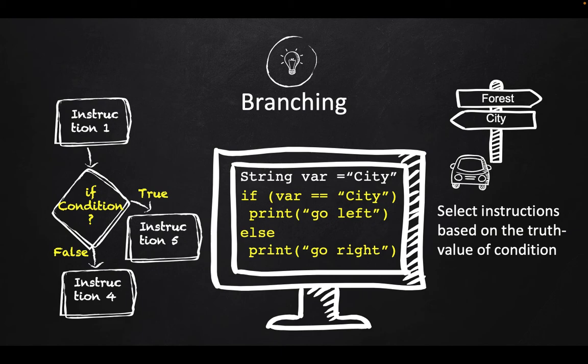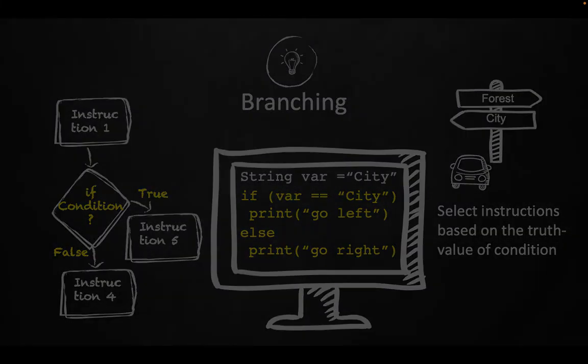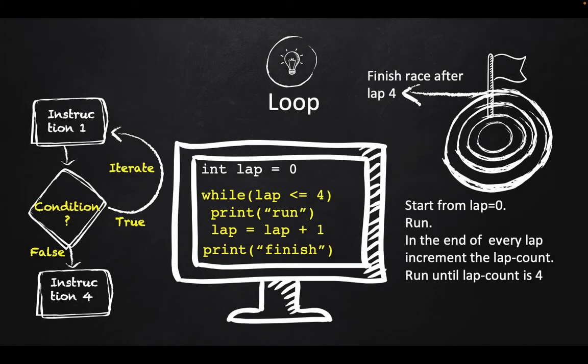The next control structure is looping, which tells you how to execute some specific set of instructions repetitively. Here also there is a condition. If the condition is true, then some specific set of instructions is executing or repeating again and again.